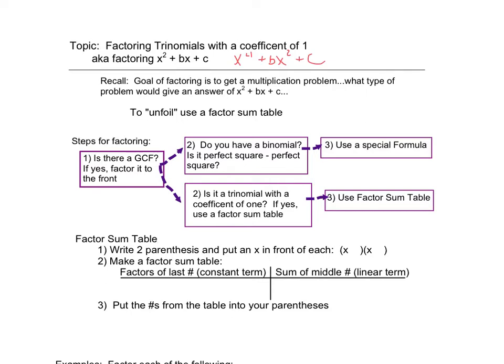Our whole goal of factoring is to make a multiplication problem. If I think about what type of multiplication problem would give me this as a product, I know that whenever I do a binomial times a binomial and use that foiling process, I always get that trinomial back.